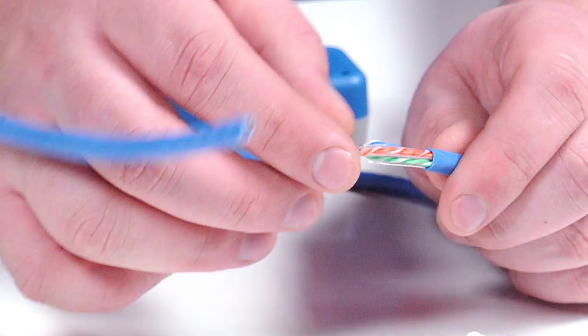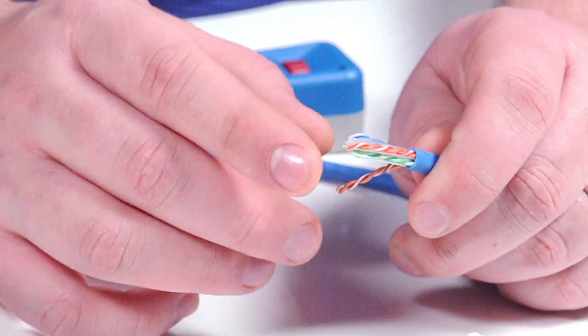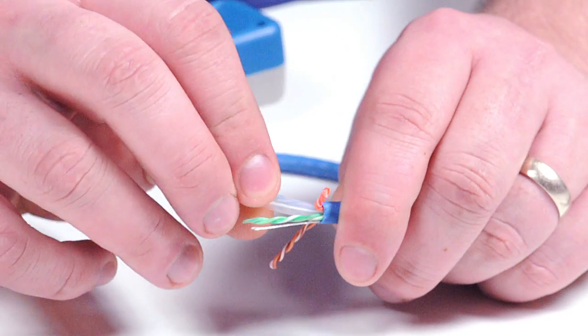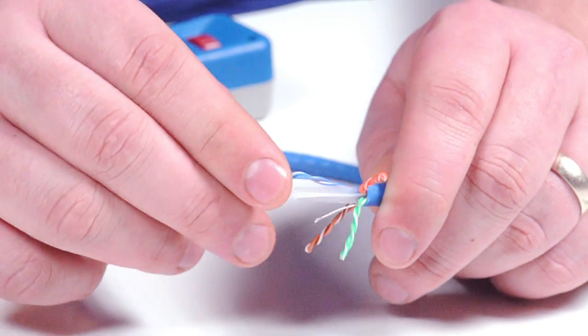On the inside, you'll find a piece of string and four twisted color-coded pairs and a spline in the middle. Spread out the four color-coded pairs and cut the spline at the base.